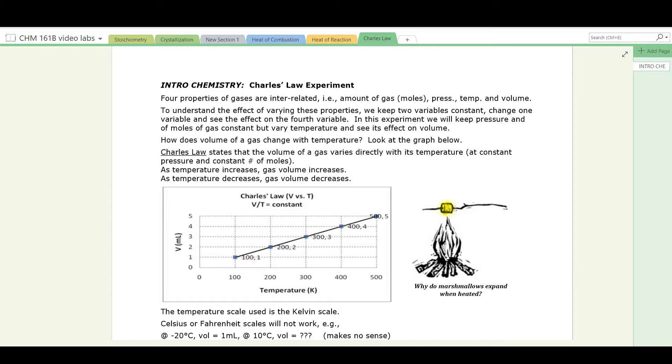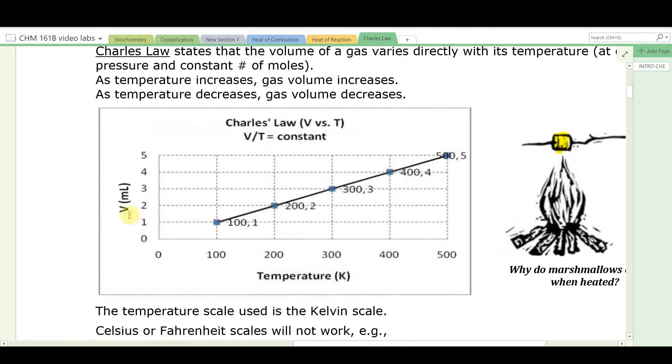Look at the graph below. Here we have volume of a gas in milliliters versus temperature of a gas in kelvins. Start with one milliliter of gas at 100 Kelvin. If we double the Kelvin temperature and go to 200 Kelvin, what happens to the volume? Well, the volume doubles. It goes up to two milliliters. What happens when you increase the Kelvin temperature by a factor of four, from 100 to 400? Well, then the volume increases by a factor of four, one mil to four mils, and so on.